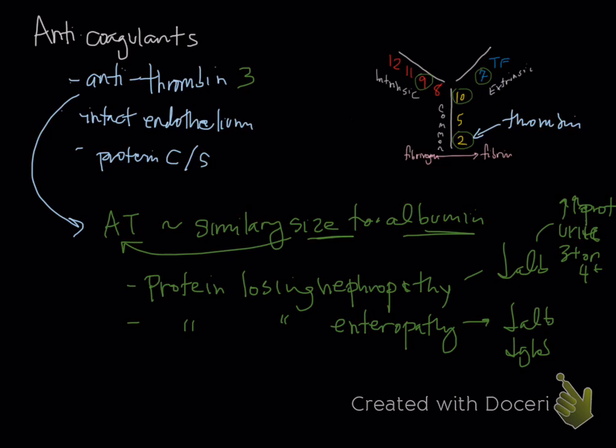The last way that antithrombin decreases is when it's consumed. It's consumed in the syndrome known as disseminated intravascular coagulopathy, which we'll talk about in a separate video.